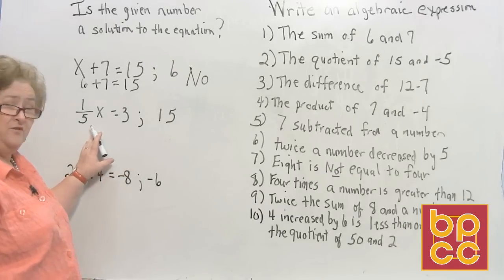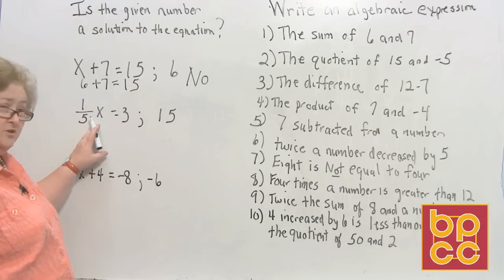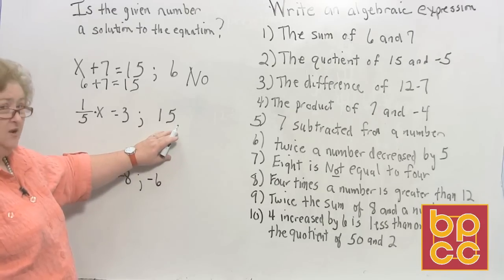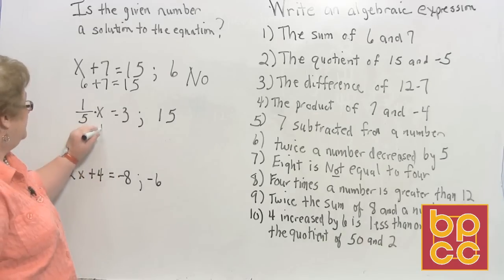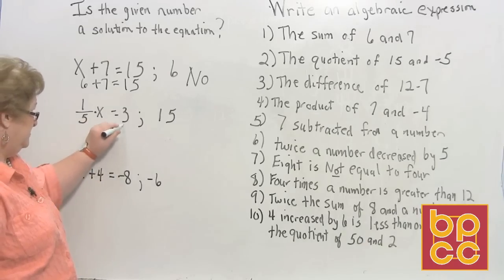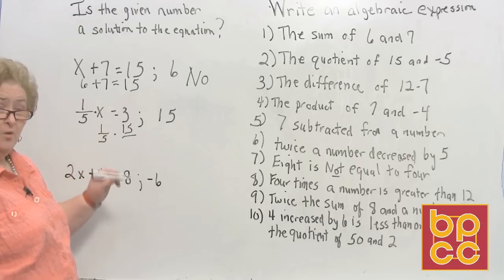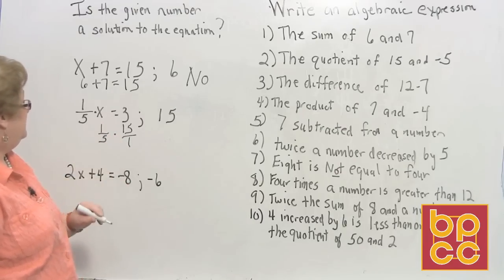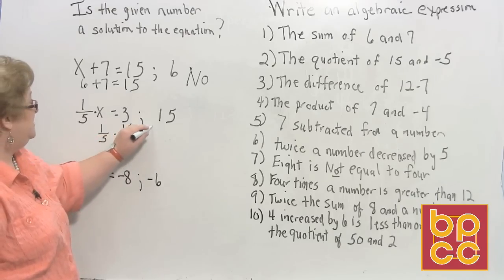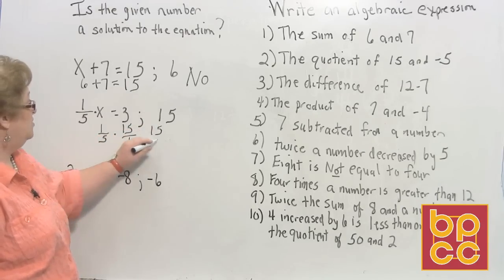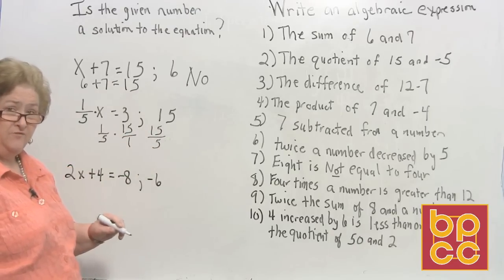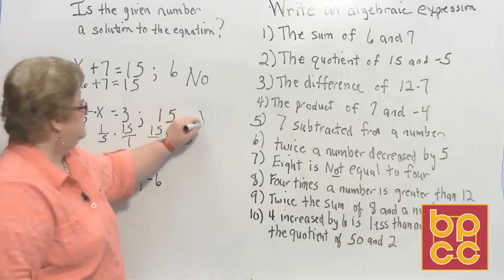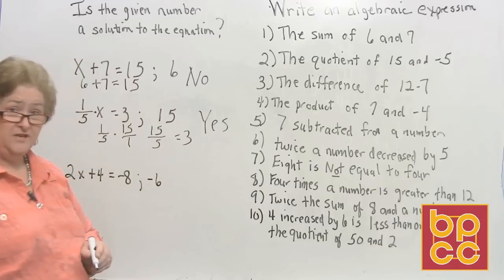Our next one: we have one-fifth x equals 3. Remember that one-fifth hooked to an x is like one-fifth times x. This time, I'd like to use 15 for x. So let's write one-fifth times 15, and since we're doing a fraction, I'll put 15 over 1 — because every whole number written in fraction form has a 1 underneath it. Multiplying: 1 times 15 is 15, and 5 times 1 is 5. That's an improper fraction, so 15 divided by 5 does equal 3. So yes, 15 is a solution to this problem.